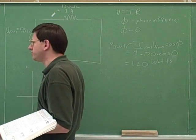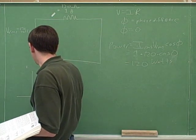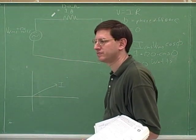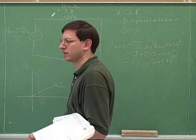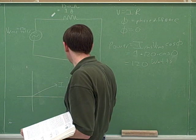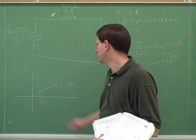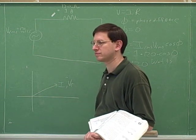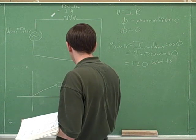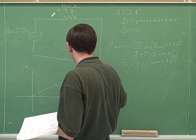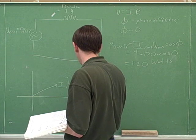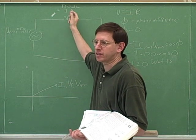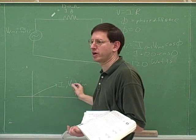We can use phasors to describe the relationship between two things. Suppose that this line represents the current — we can use the same line to represent the voltage across the resistor, and that would show that they're in phase with each other. The fact that we're using the same line in this symbology indicates that these two things are in phase. We would also expect that the voltage from the generator would be in phase with the voltage across the resistor because they're in series. All three things would be in phase with each other.